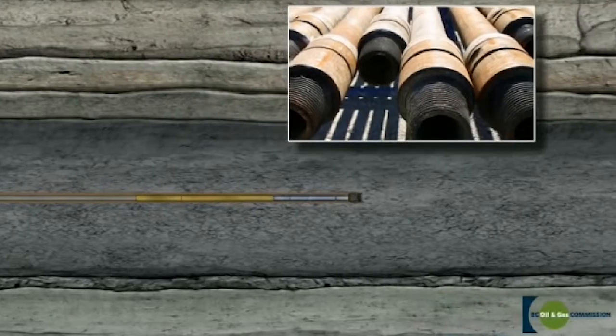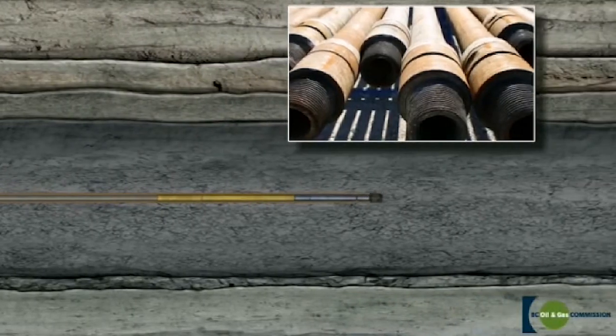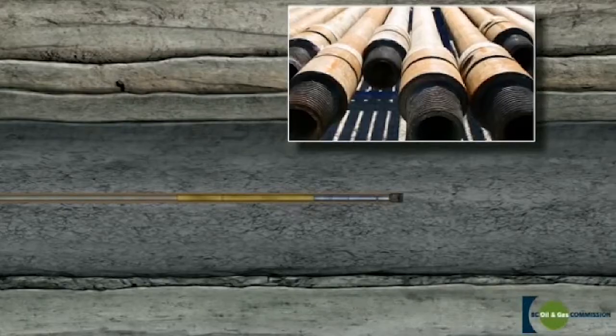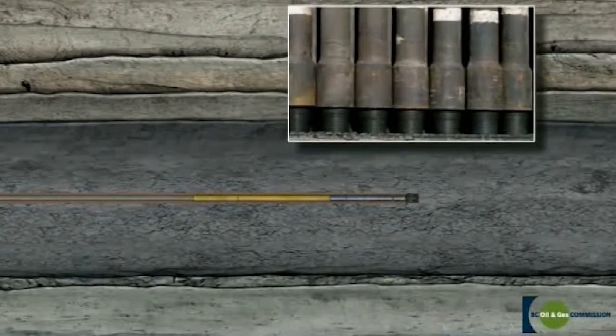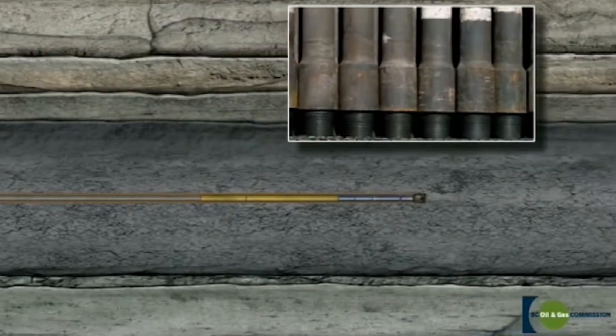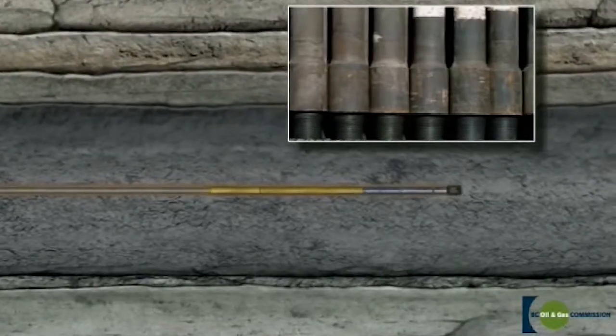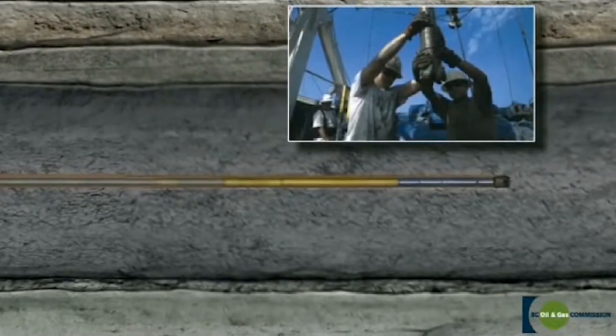The pipe used to drill the well measures 30 feet in length and weighs approximately 495 pounds each. It takes over 350 pieces of pipe weighing nearly 87 tons to drill a 10,500 foot well.